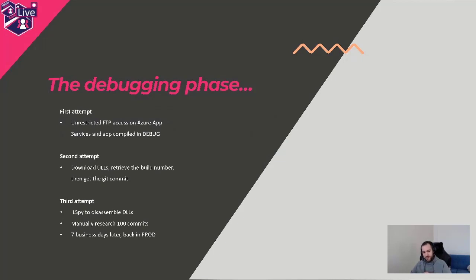We started debugging, because that's what we do as developers mainly. We looked first at the configuration in Azure, specifically the App Service. We noticed it had non-restricted FTP access, which was strange — anybody could have gone there and deleted everything. But more importantly, the application was compiled in debug mode, because we noticed some files that were present only because it was compiled in debug mode.